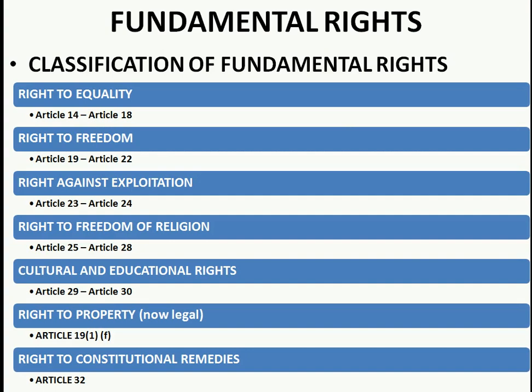There are six fundamental rights: Right to Equality (Articles 14-18), Right to Freedom, Right against Exploitation, Right to Freedom of Religion (Articles 25-28), Cultural and Educational Rights (Articles 29-30), and Right to Property, which is now a legal right under Article 300A (earlier under Article 19(1)(f)).